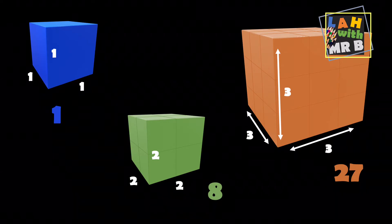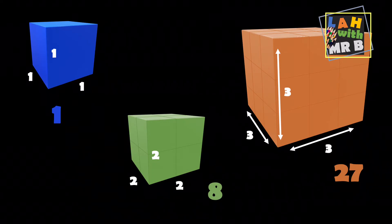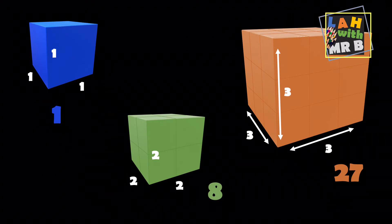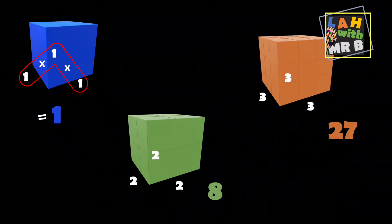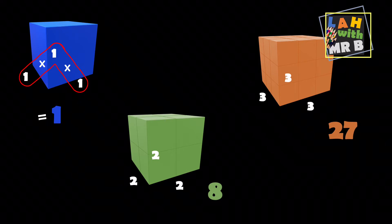There is a shortcut that we can use instead of actually having to make a physical cube each time we want to cube a number. Looking back at the blue one cubed, we can see that all we need to do is multiply the sides by each other. One times one times one, or in other words, one cubed gives us one.